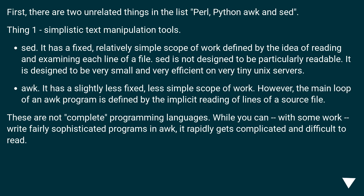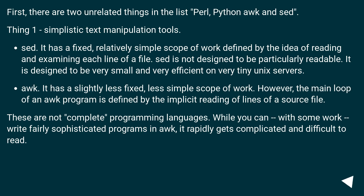First, there are two unrelated things in the list: Perl, Python, Awk, and Sed. Thing 1 — simplistic text manipulation tools. Sed has a fixed, relatively simple scope of work defined by the idea of reading and examining each line of a file. Sed is not designed to be particularly readable; it is designed to be very small and very efficient on very tiny Unix servers. Awk has a slightly less fixed, less simple scope of work; however, the main loop of an Awk program is defined by the implicit reading of lines of a source file. These are not complete programming languages. While you can, with some work, write fairly sophisticated programs in Awk, it rapidly gets complicated and difficult to read.